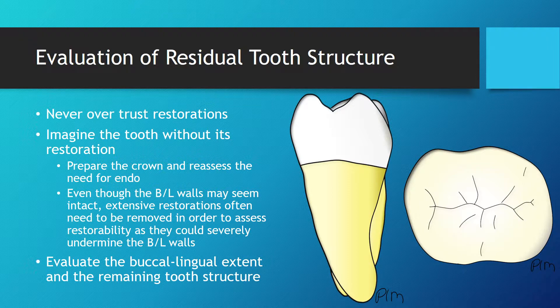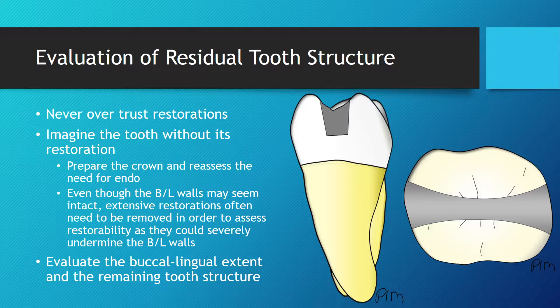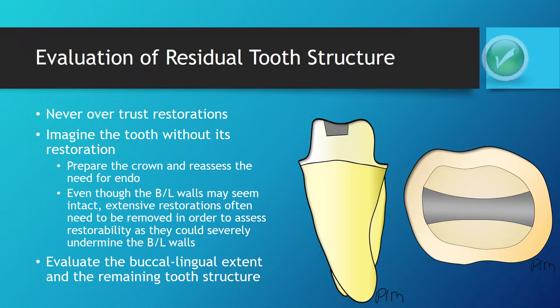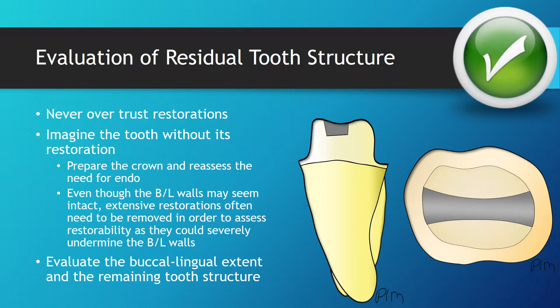As seen in this first example, a relatively small MOD direct restoration is present on the tooth. In this situation, this tooth would be an ideal candidate to receive a crown, as once the tooth is prepared, plenty of structure will remain and the prognosis will be excellent.